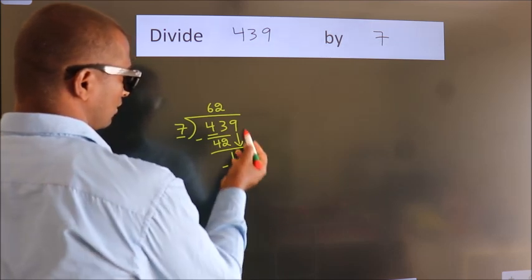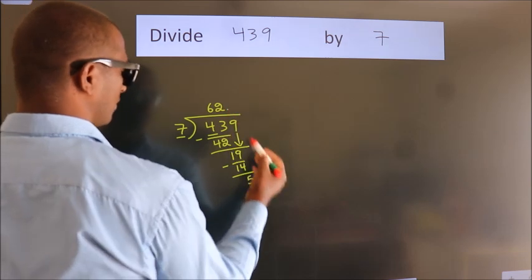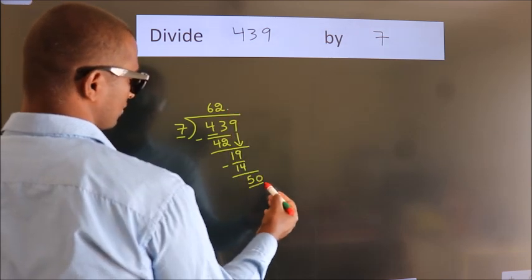After this, there are no more numbers to bring down. So what we do is put a dot and take 0, giving us 50.